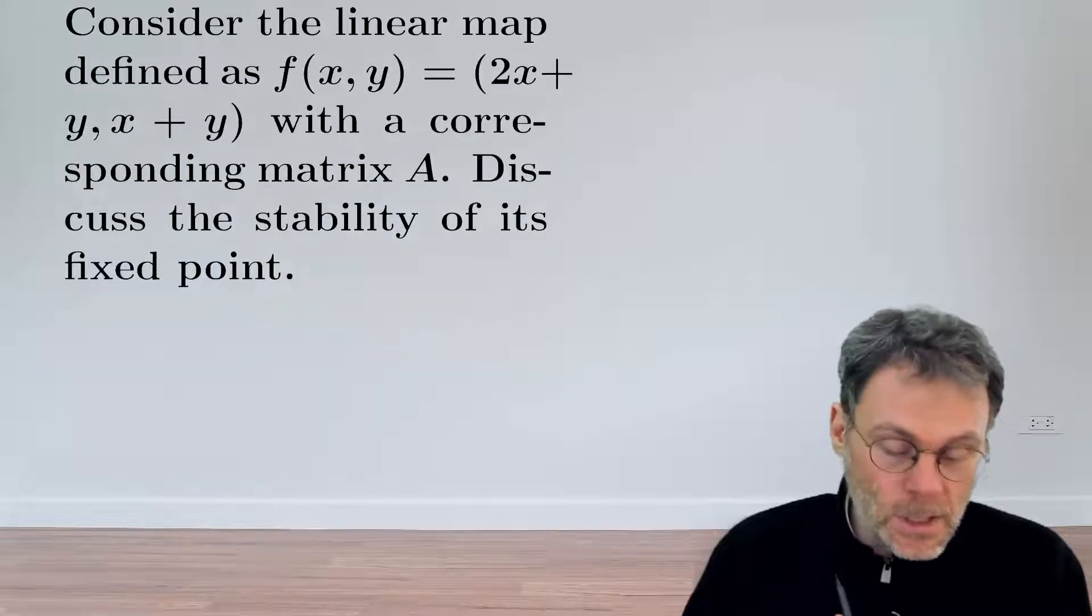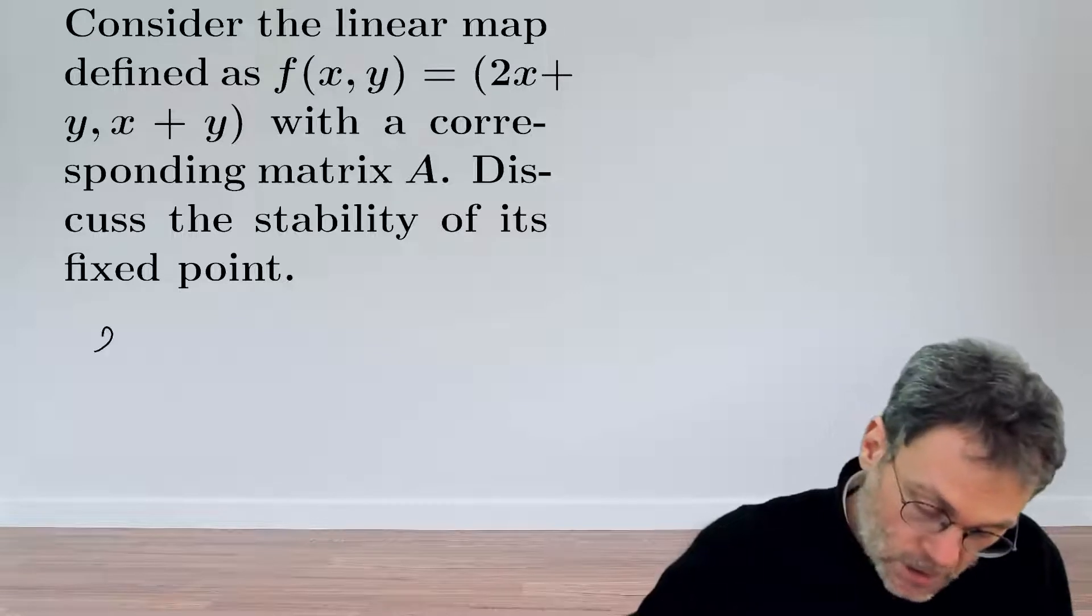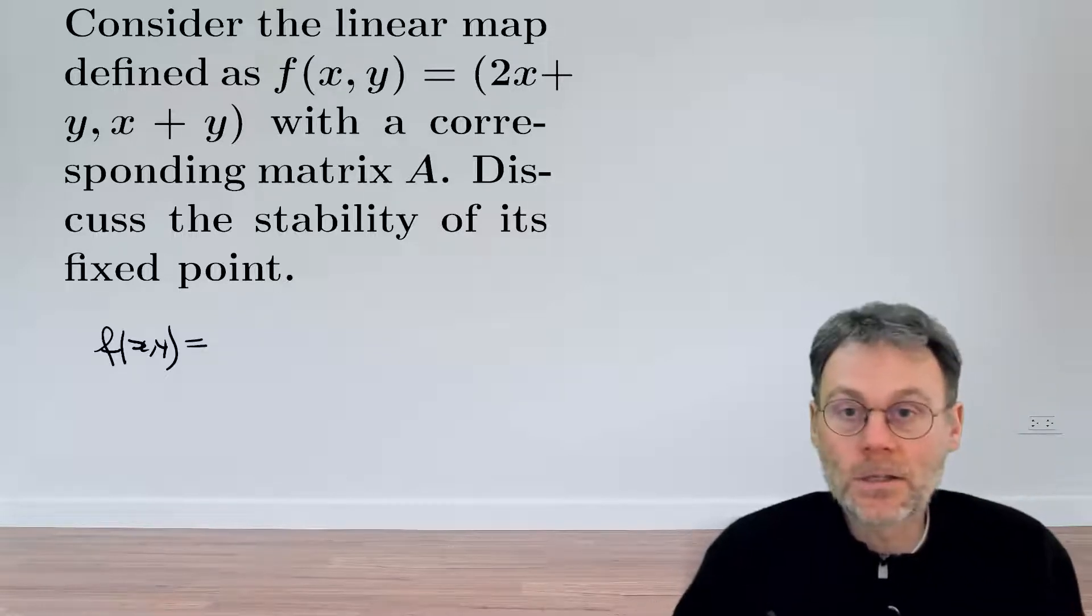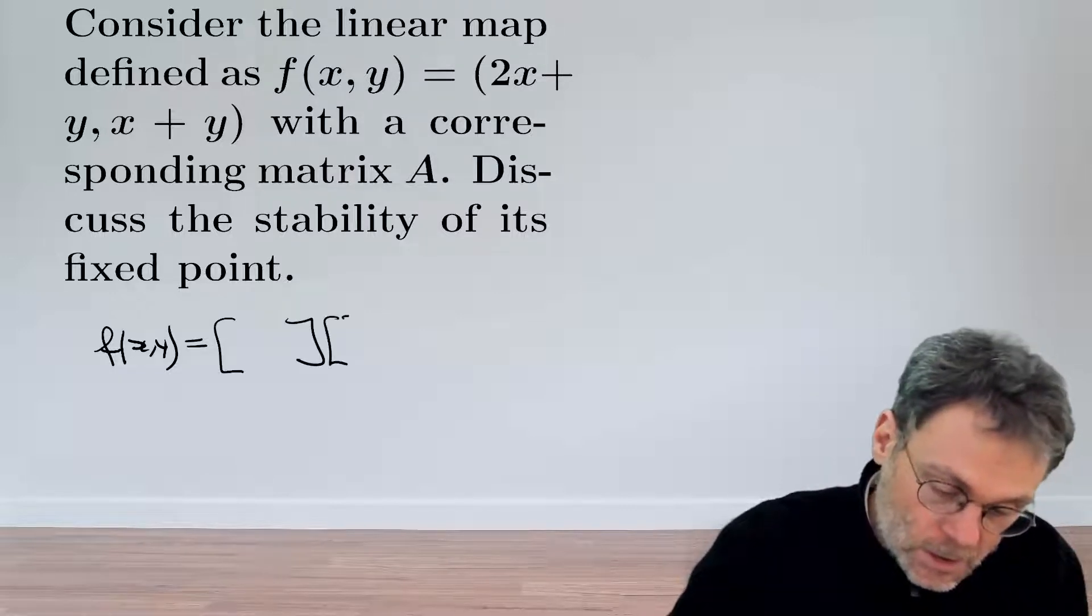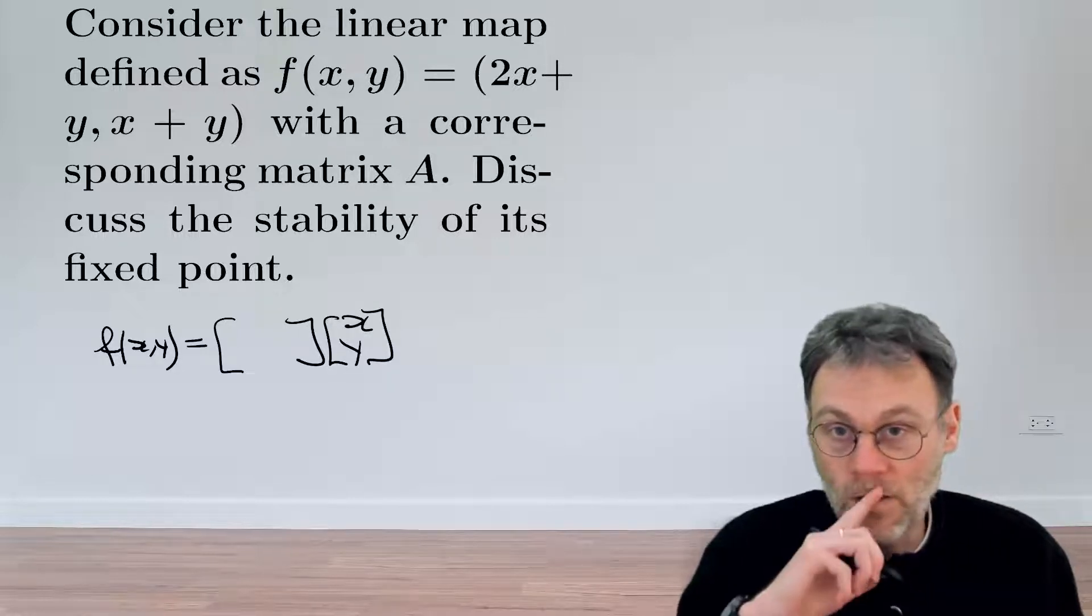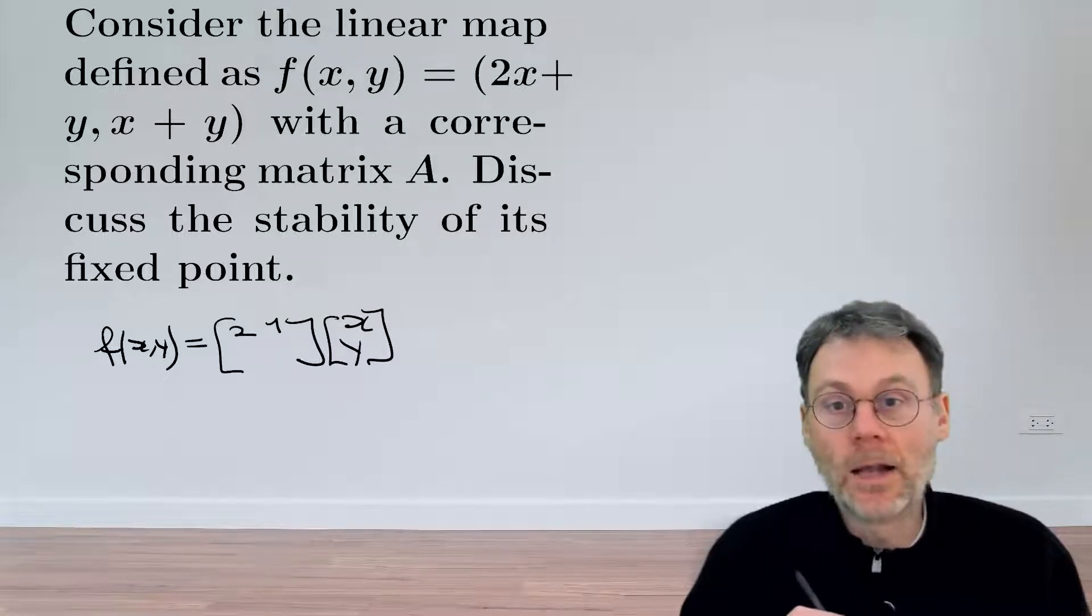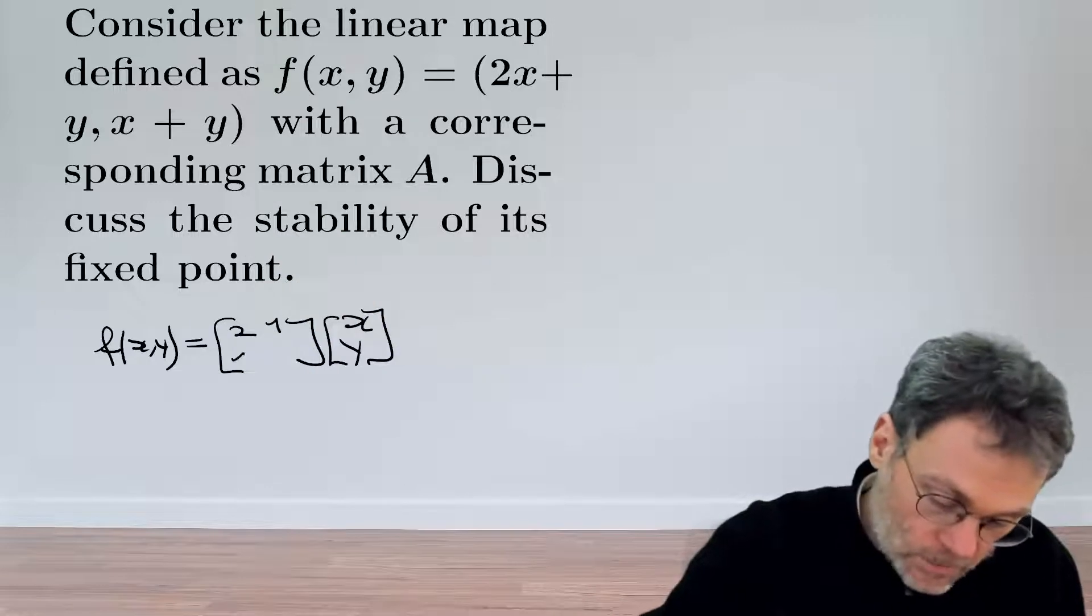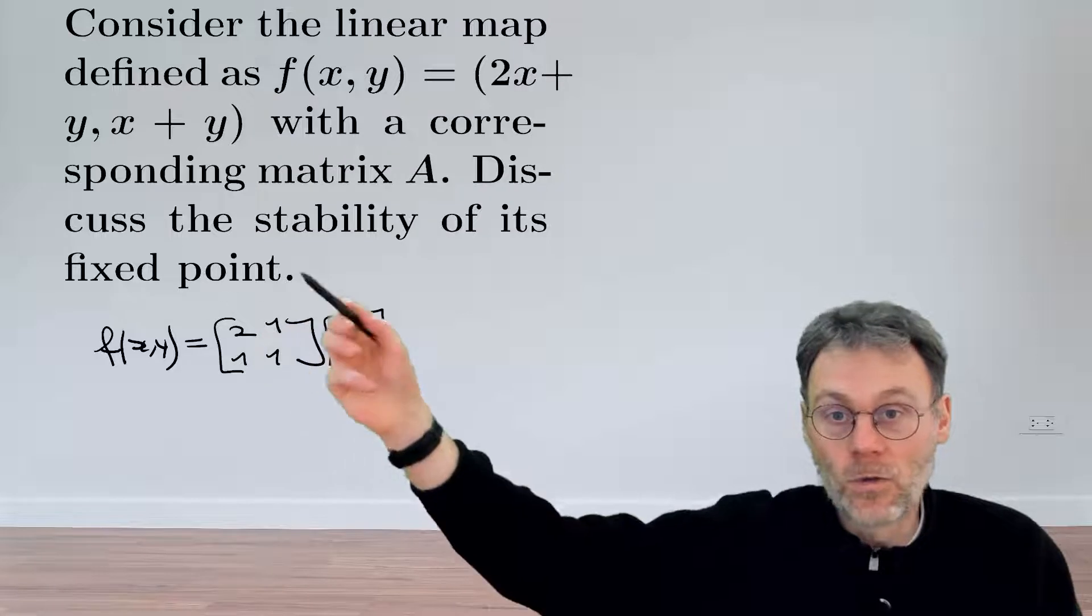This linear map obviously has the origin as its fixed point. In order to express the linear map as a matrix, 2x plus y, if you write that as a 2 by 2 matrix multiplied by x and y, then for the first equation 2x plus y that gives us a 2 here and a 1 there, and the second equation x plus y gives us 1, 1. So the matrix that we need to consider is this one over here.